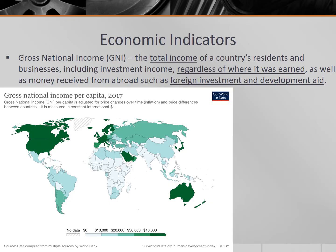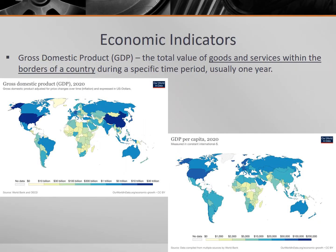This map looks at GNI per capita, which refers to the amount per person. For comparison's sake, let's look at GDP in the top left and GDP per capita in the bottom right. What do you notice when you look at total GDP compared with GDP per person? Write down some of those observations.